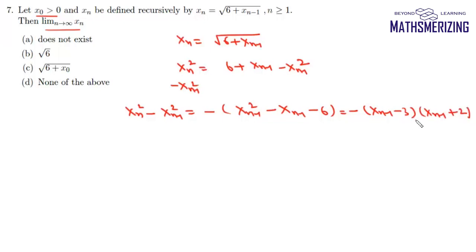Here the critical points are three and minus two. Since x₀ is greater than zero, we take two cases. Case one: if x₀ is less than three.